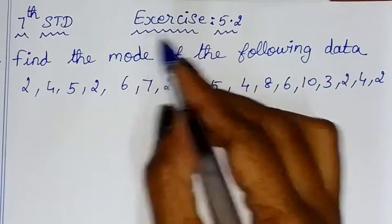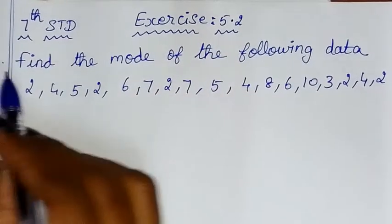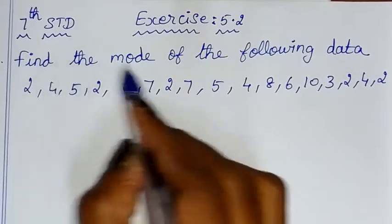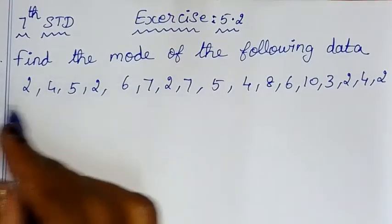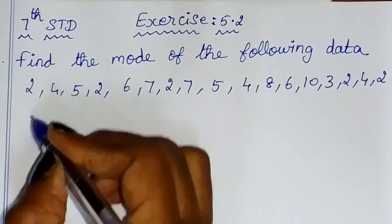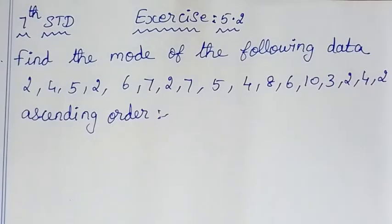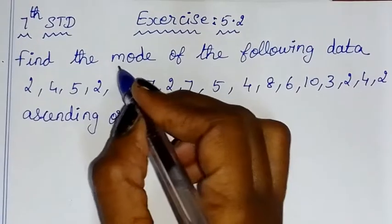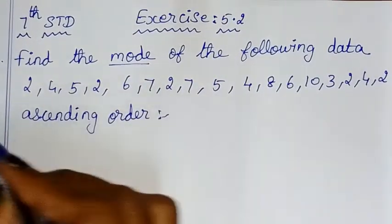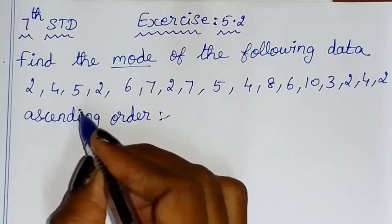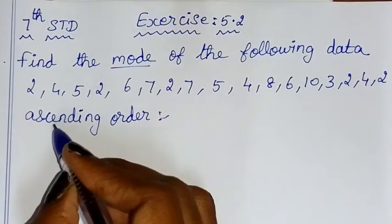Hello children. In this exercise 5.2, sum number 1, find the mode of the following data. First, arrange in ascending order — the maximum number of times a repeated value is the mode. Arranging in ascending order will make it easy to find the mode.